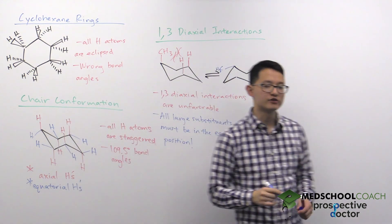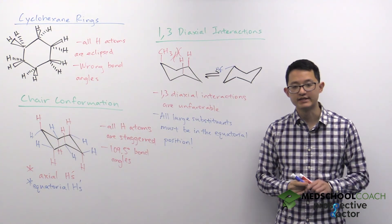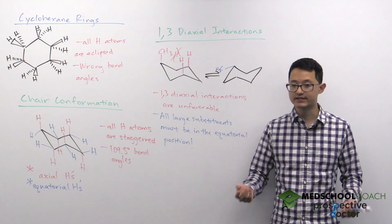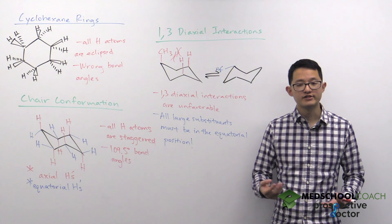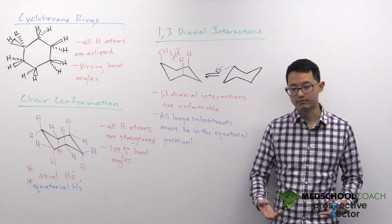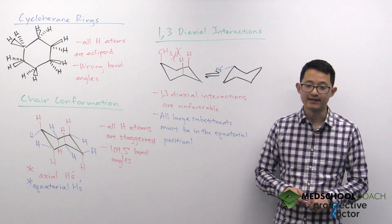This is actually a helpful strategy for MCAT questions. If you see different answer choices that look similar, and you notice that in some answer choices a large substituent is in an axial position, you can definitely eliminate that answer choice.